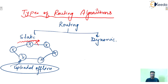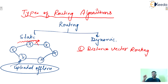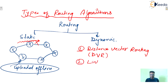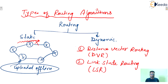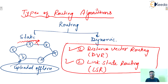In dynamic routing, two types of algorithms are there. First one is Distance Vector Routing — DVR. Dynamic means if in any path there is more traffic at this moment, then automatically the path will be changed using the routing algorithm. Second one is Link State Routing — LSR. These two algorithms are in the GATE syllabus, so we are going to discuss these two algorithms. Distance vector routing as well as link state routing will be covered in the upcoming lectures.